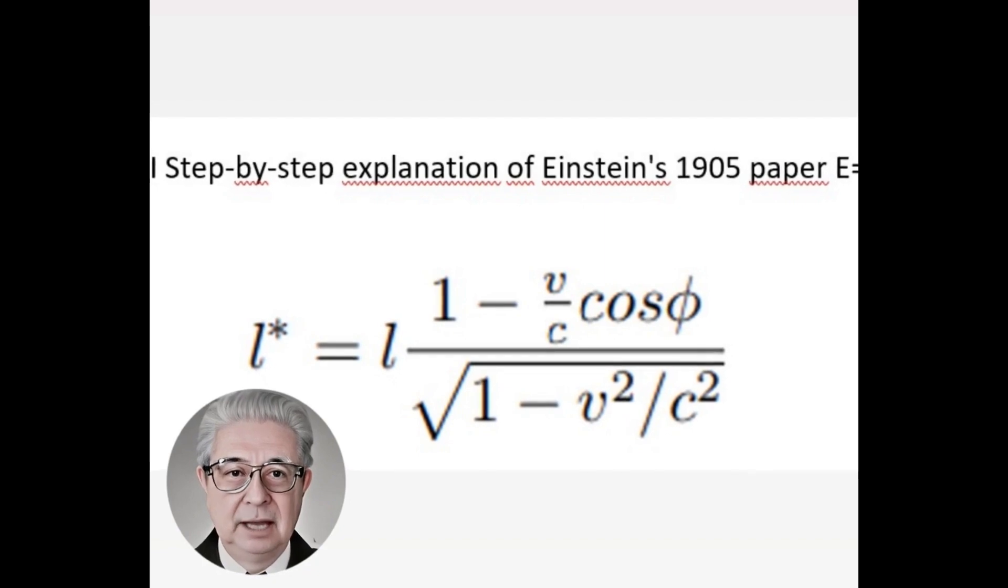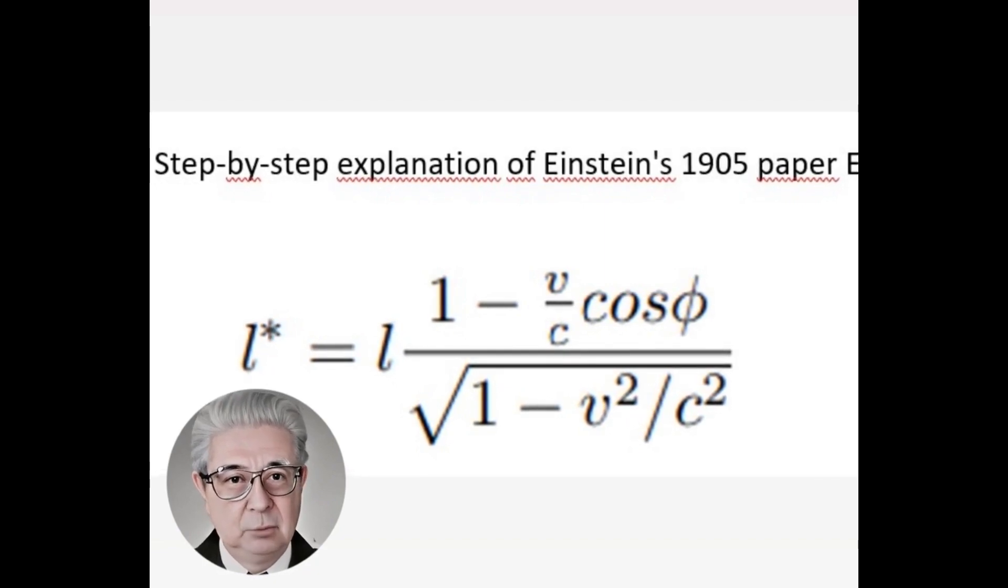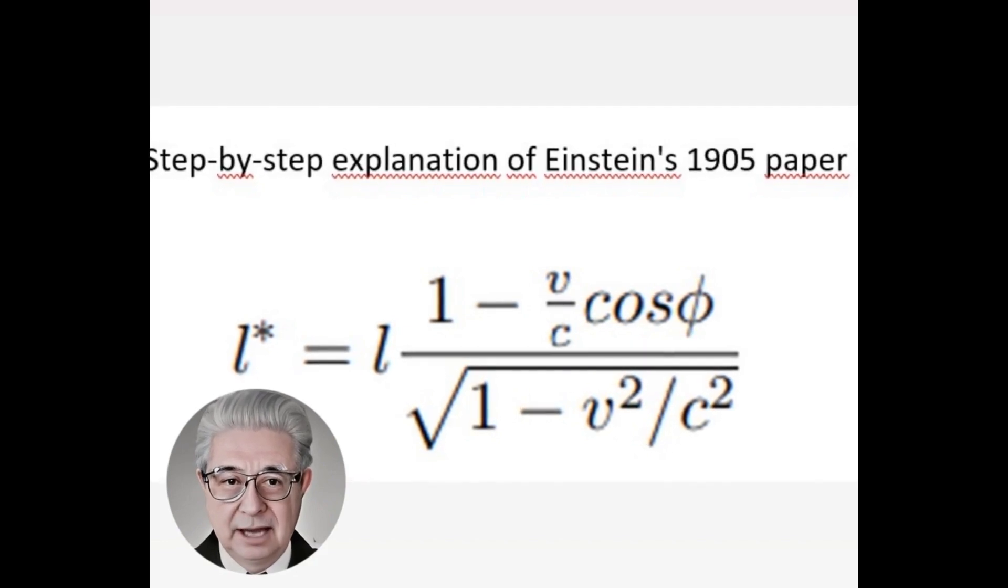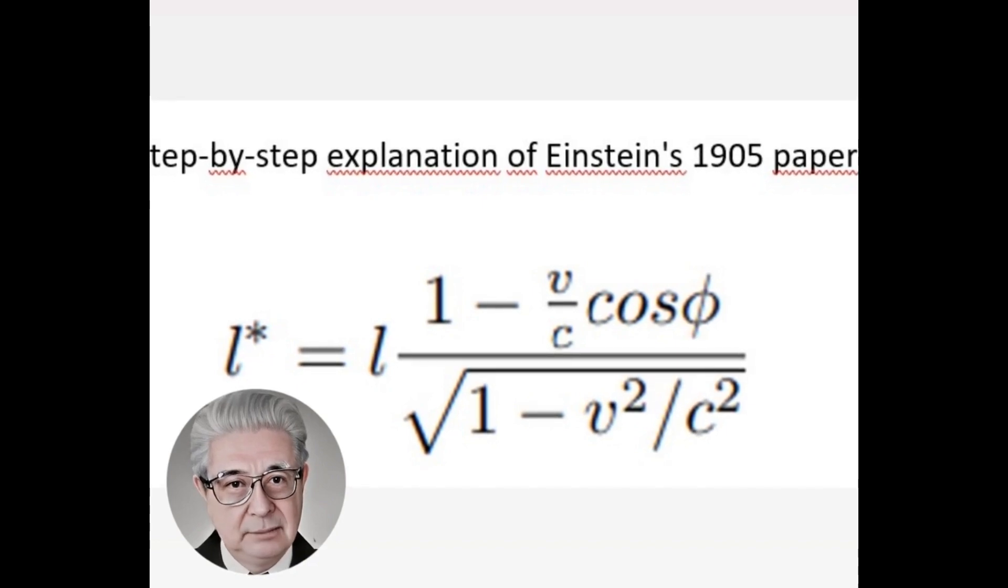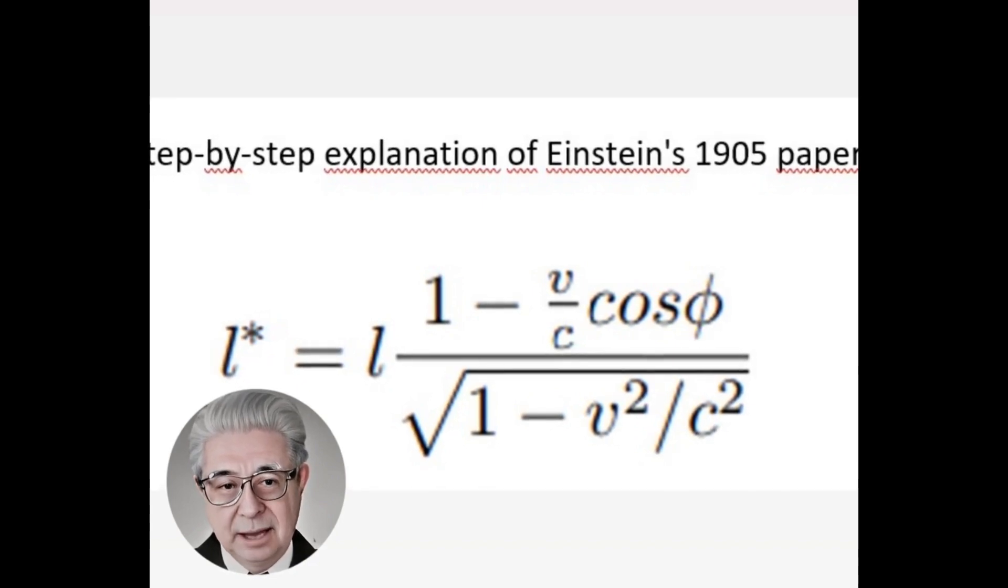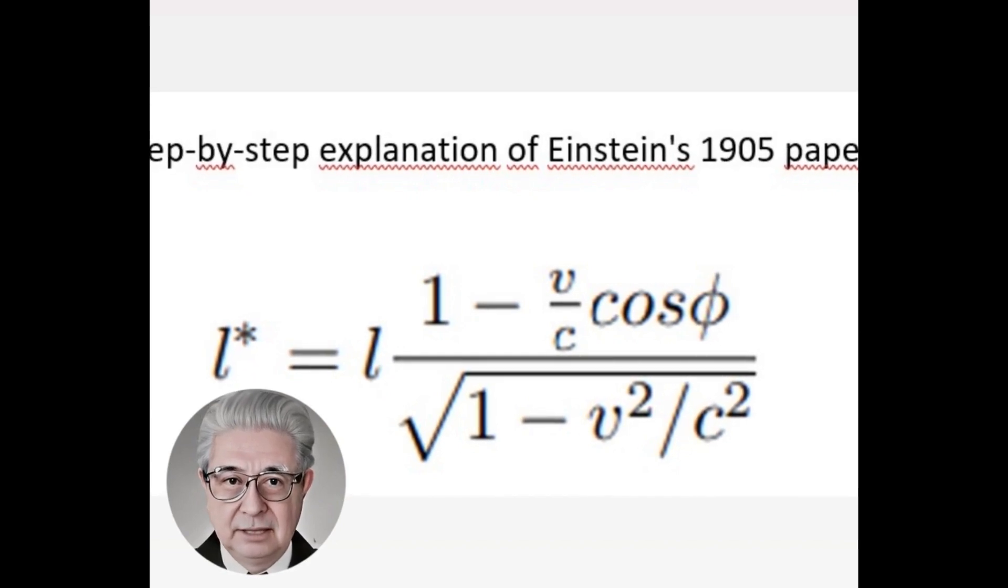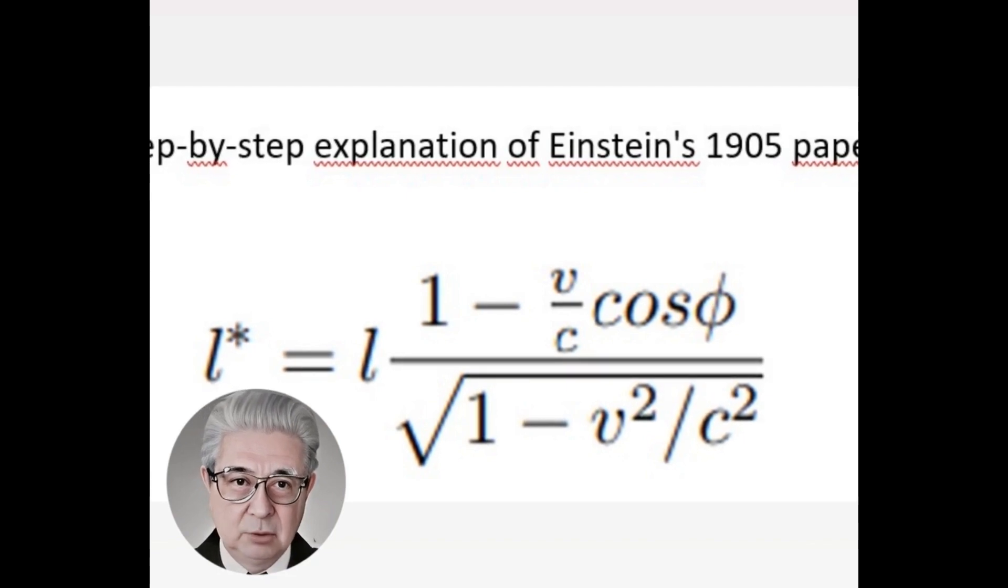The principle of energy must be applied to this process, and indeed, by the principle of relativity, with respect to both coordinate systems. If we call the energy of the body after the emission of light E1, and H1, respectively, measured in relation to the system in relative motion to the other system at rest respectively, then applying the relationship given above in the image we obtain the following equations.